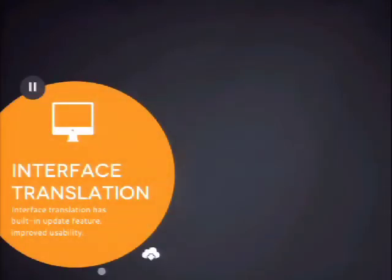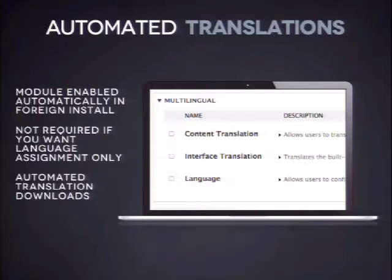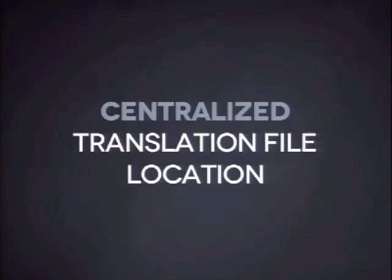Now we have interface translation building on top of this. What we put in there is automated translation downloads — when you enable the interface translation module or install Drupal in a foreign language, it will automatically download translations for core and all the modules you have on the site and import them. You don't need to do anything manually — you just add the language. It works pretty well. It's a separate module from language module — two separate things — but it's all magic. And we've improved it a lot further on top of that.